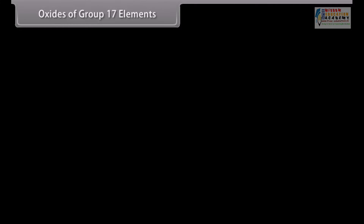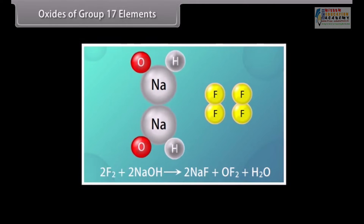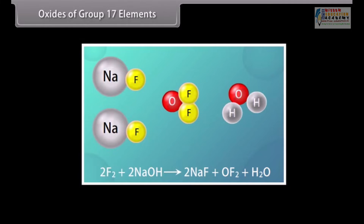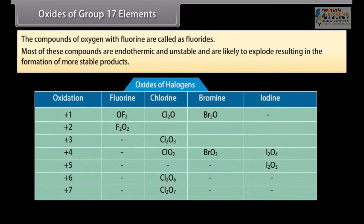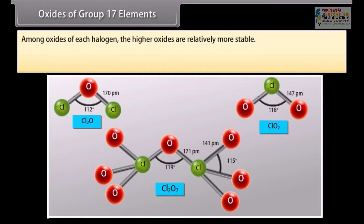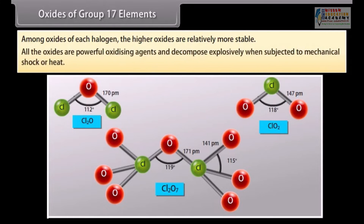Halogens do not combine with oxygen directly. For example, oxygen difluoride OF₂ is prepared by the action of fluorine on 2% sodium hydroxide solution. The compounds of oxygen with fluorine are called fluorides because fluorine is more electronegative than oxygen. Most of these compounds are endothermic and unstable and are likely to explode. Among oxides of each halogen, the higher oxides are relatively more stable. All oxides are powerful oxidizing agents and decompose explosively when subjected to mechanical shock or heat.